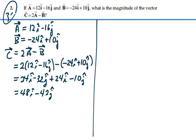That's our vector C. We want the magnitude of it. If we find the magnitude of C, we're going to square the components, add them together, take the square root. So 48 squared plus negative 42 squared, all that square root. And that is equal to 63.8.